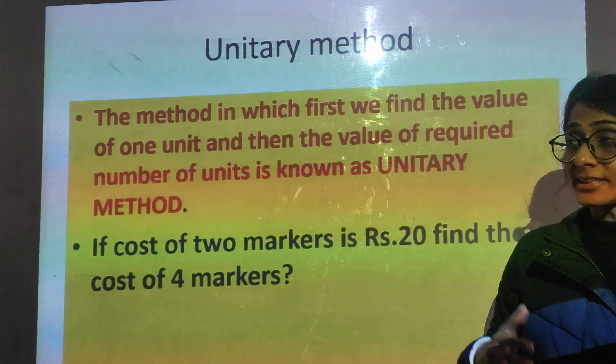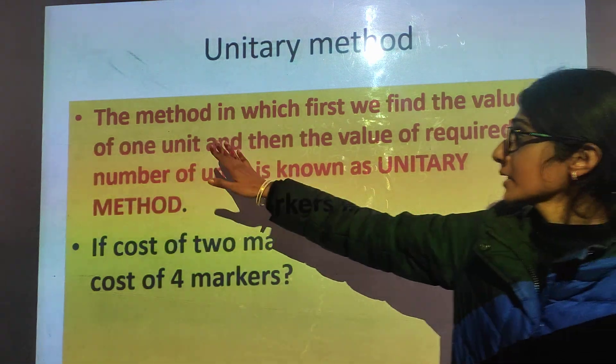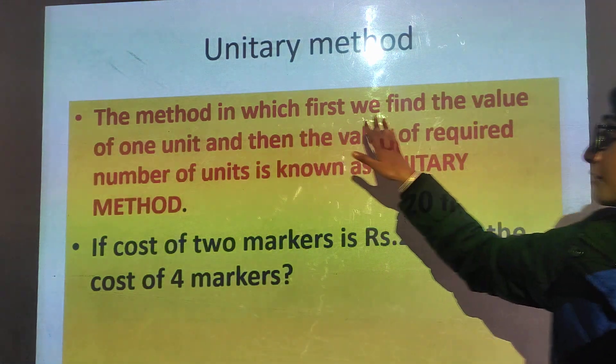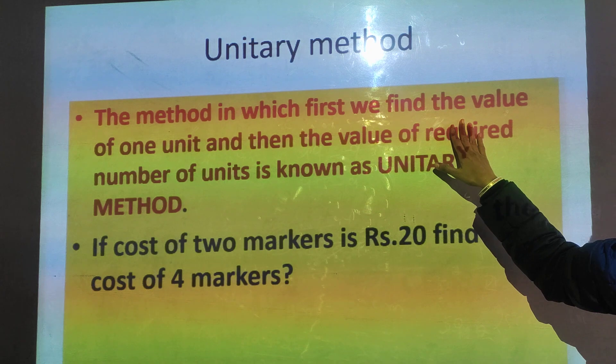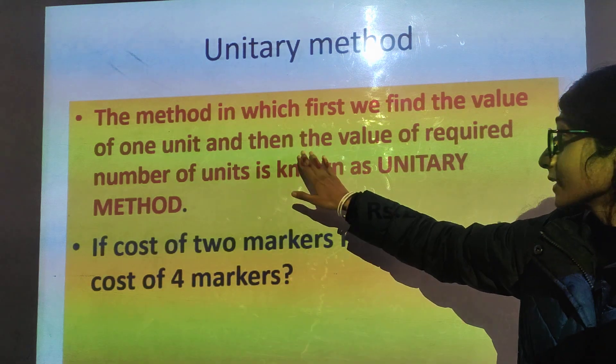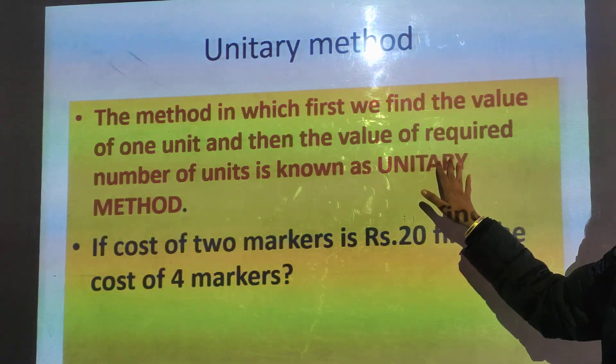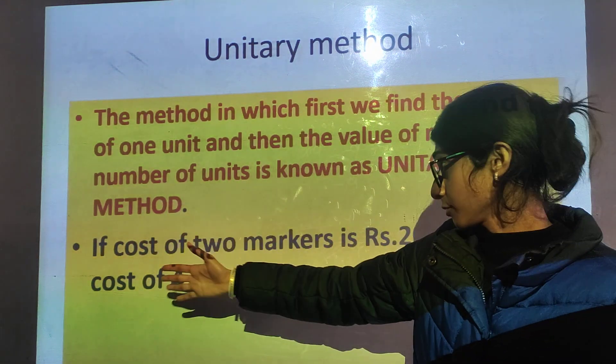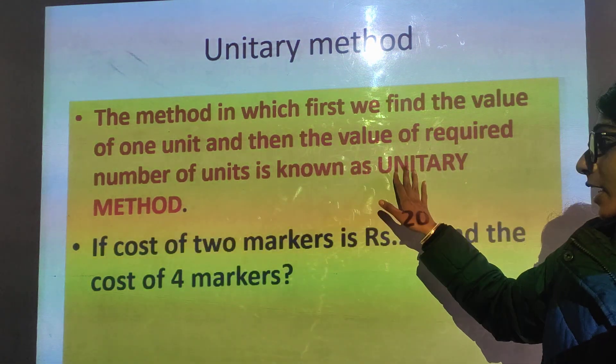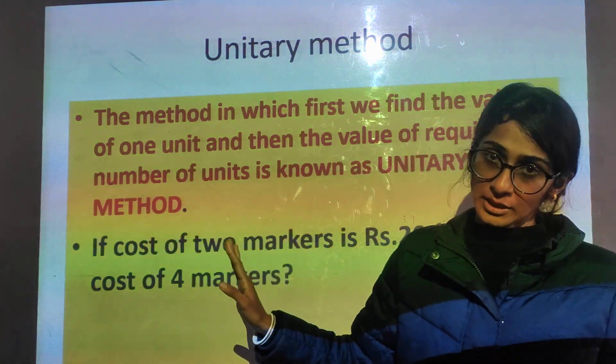So what does this method say? The method in which first we find the value of 1 unit and then the value of the required number of units is known as unitary method.